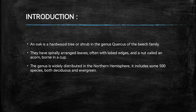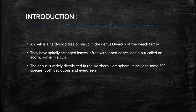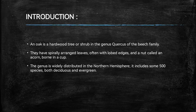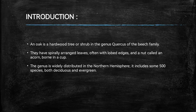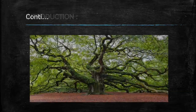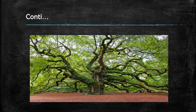So let's start with the introduction. What is oak? An oak is a hardwood tree or shrub in the genus Quercus of the Beech family. They have spirally arranged leaves, often with lobed edges and a nut called an acorn born in a cup. The genus is widely distributed in the northern hemisphere and includes some 500 species, both deciduous and evergreen. Here is a picture of an oak tree.